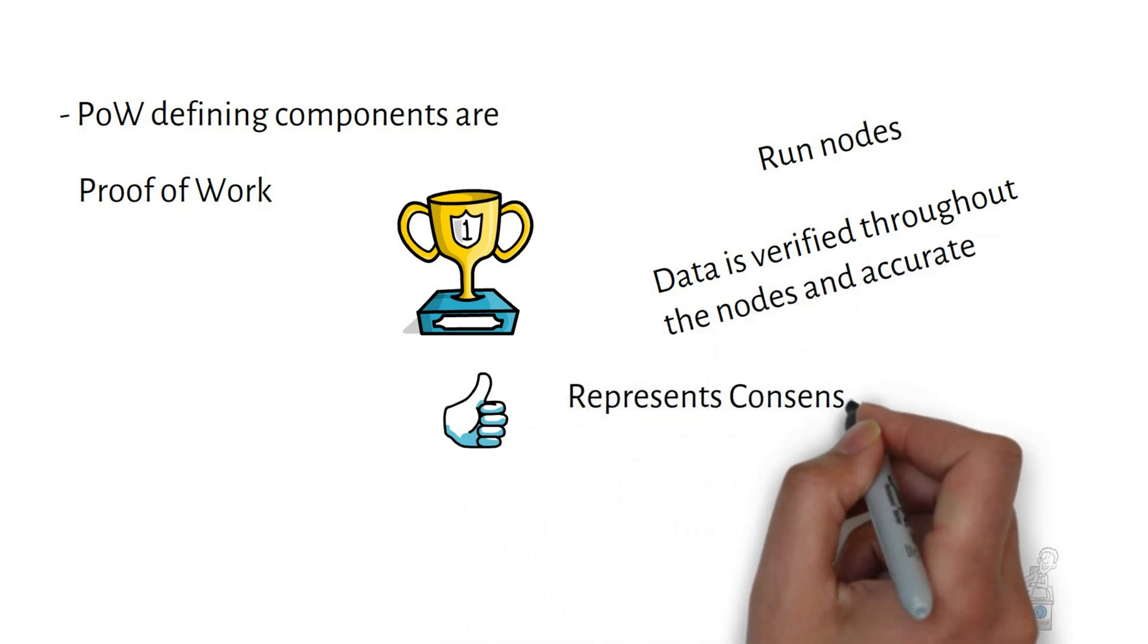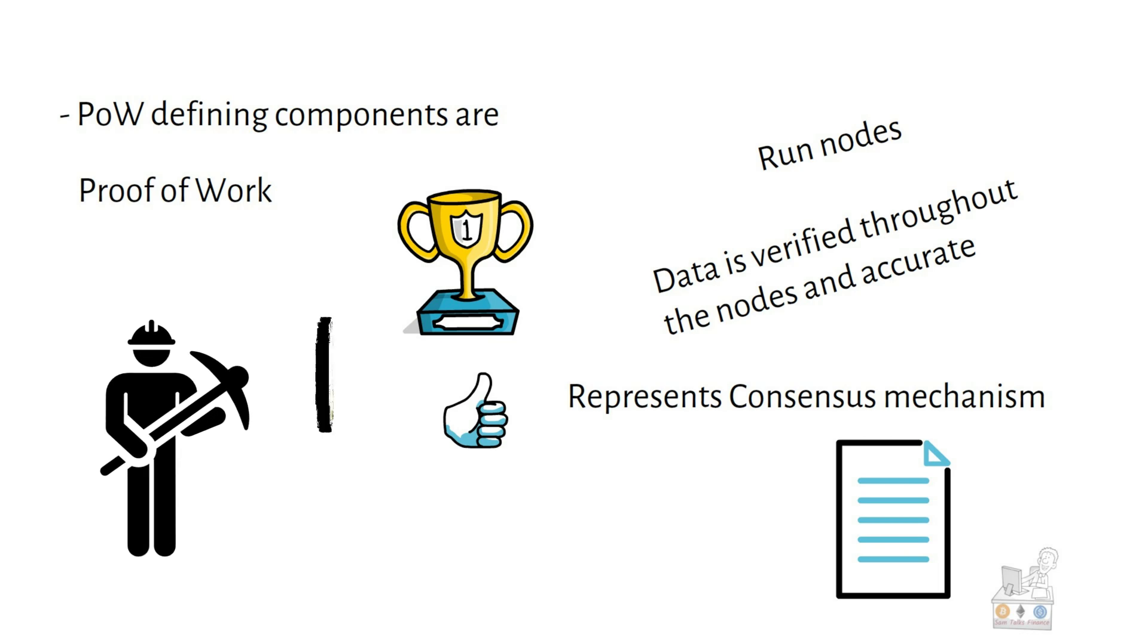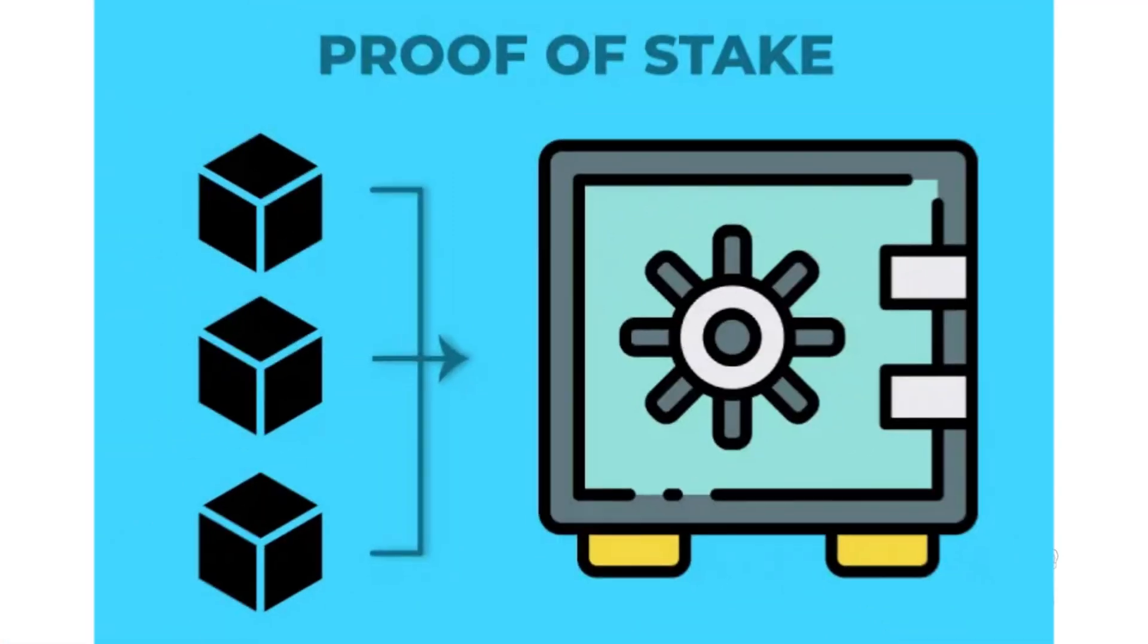Proof-of-stake is the second most popular consensus mechanism.